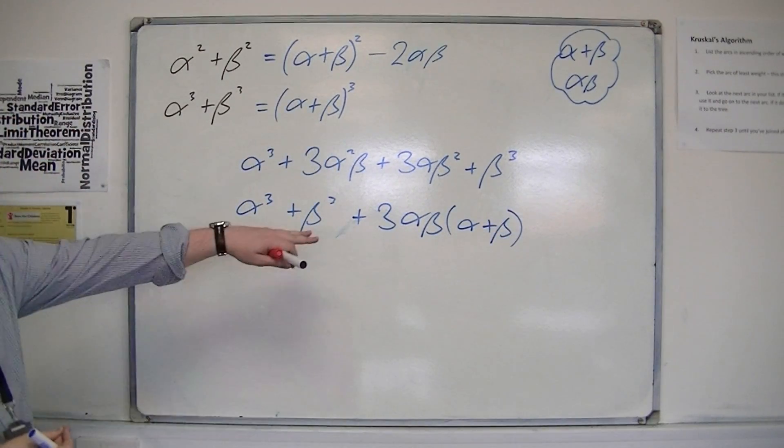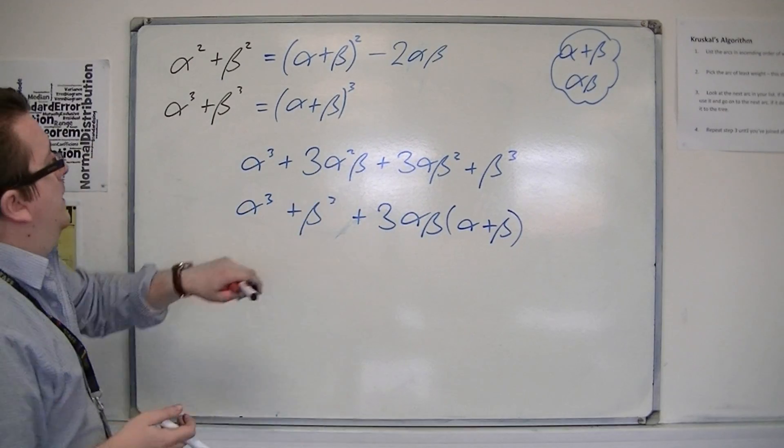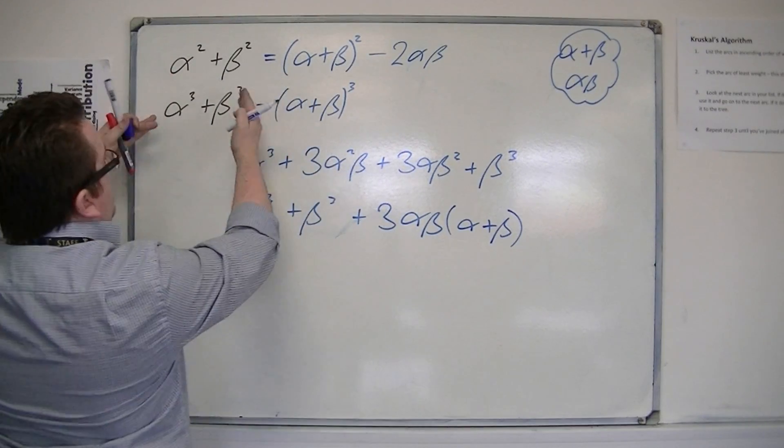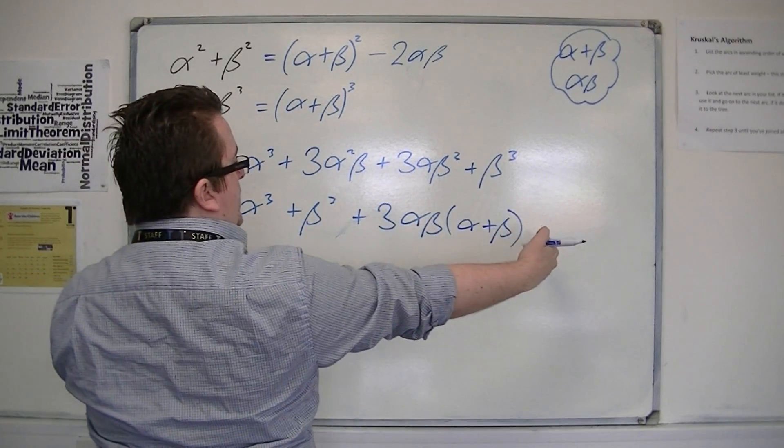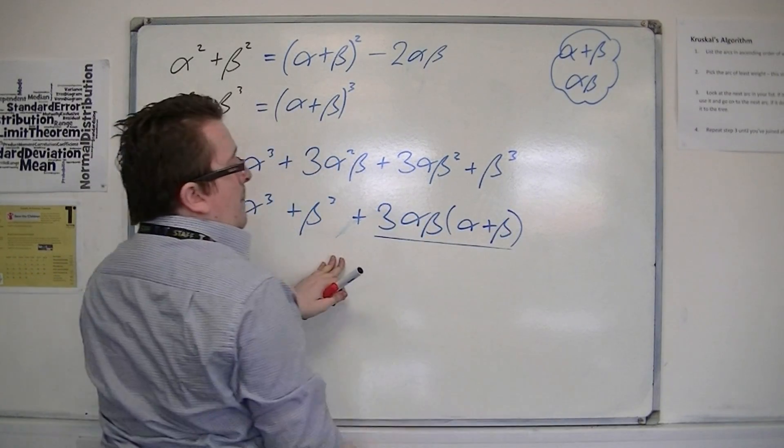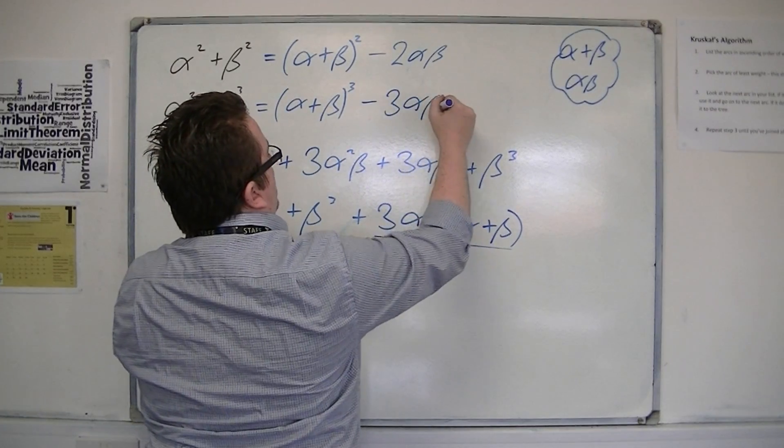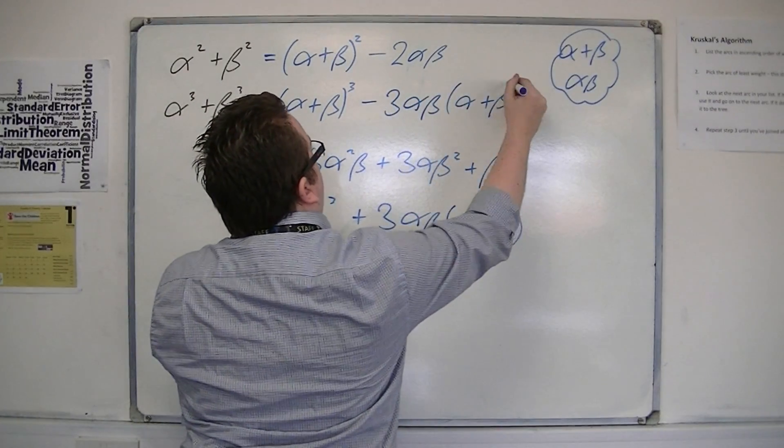Now, I've got it into the format that I want. So, alpha cubed plus beta cubed will be the whole alpha plus beta cubed, but not that bit. So, take away 3 alpha beta, alpha plus beta.